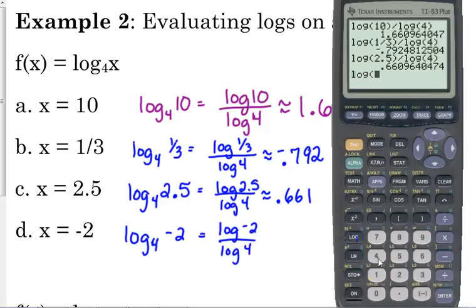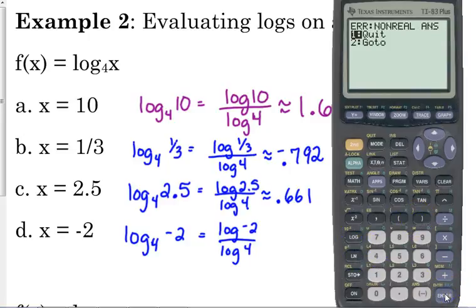Log base 4 of negative 2. So that's the log of negative 2 over the log of 4. I get an error, non-real answer. Why would I get an error? Yeah, it's the log of the negative number, okay? But numerically, why does that make sense? Why can't we take the log of the negative number?